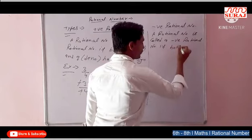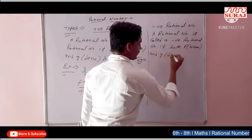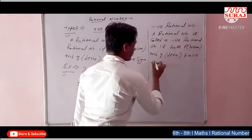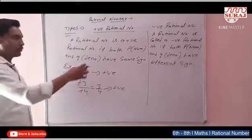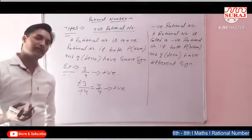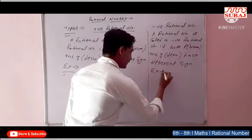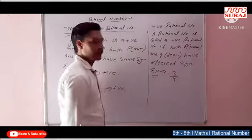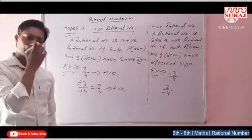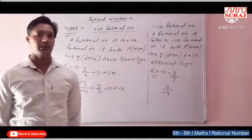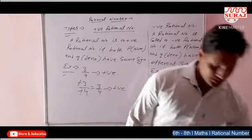If both P (numerator) and Q (denominator) have a different sign, it means P or Q have different signs — if P is positive then Q is negative, or P is negative then Q is positive. Example: minus 3 by 4, or second example 3 upon minus 4. This type of example where numerator or denominator has a negative sign means the complete number is a negative number.